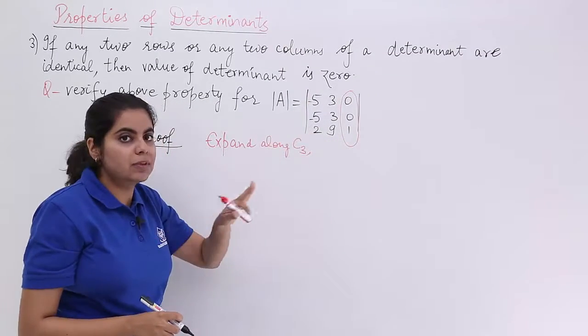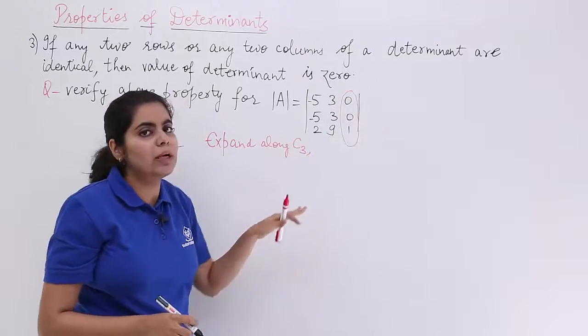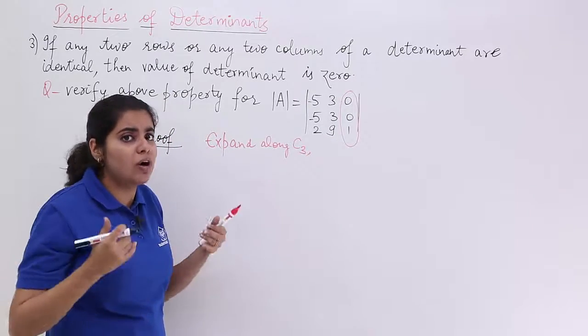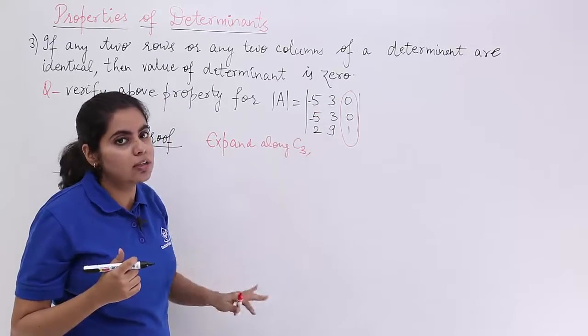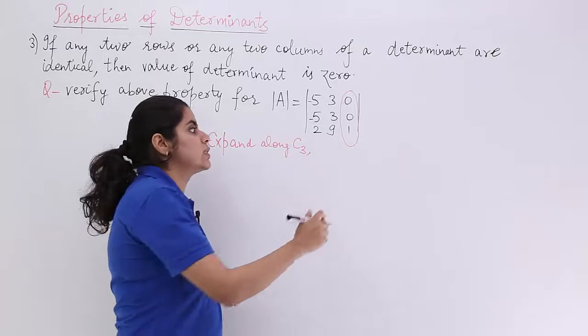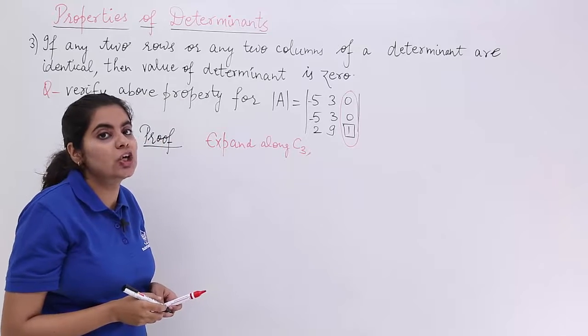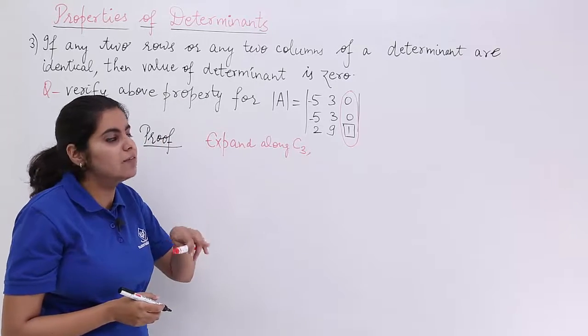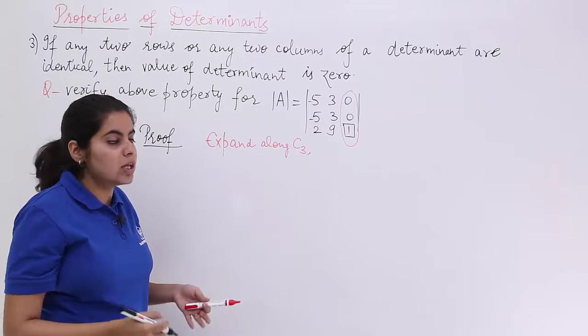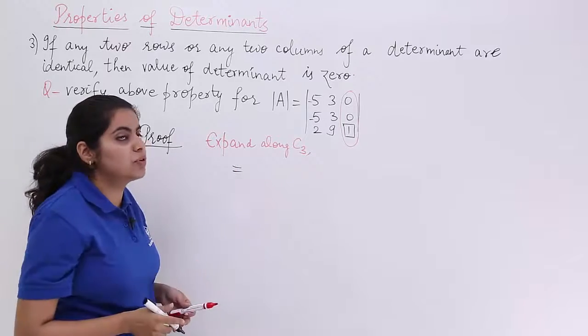Now 0 multiplied by something does not change anything. So we don't need to bother even. This 1 is what is important. Now this 1 is in which position? It is 3rd row, 3rd column. 3 plus 3 makes it 6 which is even. So 1 into something. Now what is that something? We have to see.